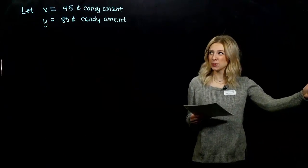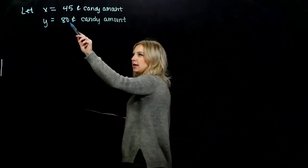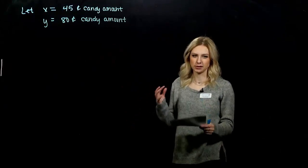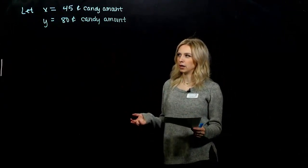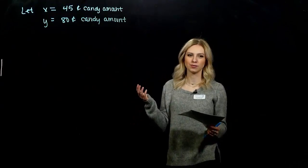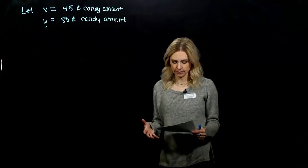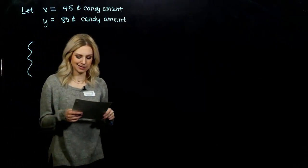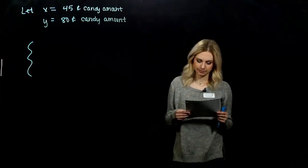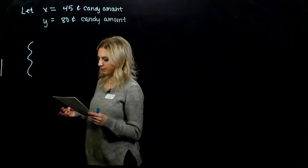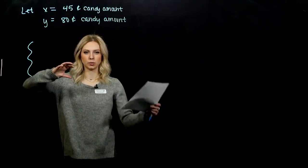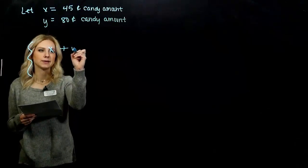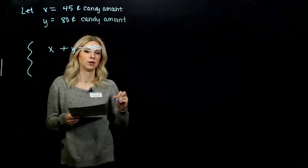What are we being asked to find? How much of each type of candy should be used? Let x be the amount of the 45 cent candy and y be the 80 cent candy amount. We're going to keep those units in cents. Altogether I want 350 pounds of a mixture. x plus y needs to give me 350 pounds.